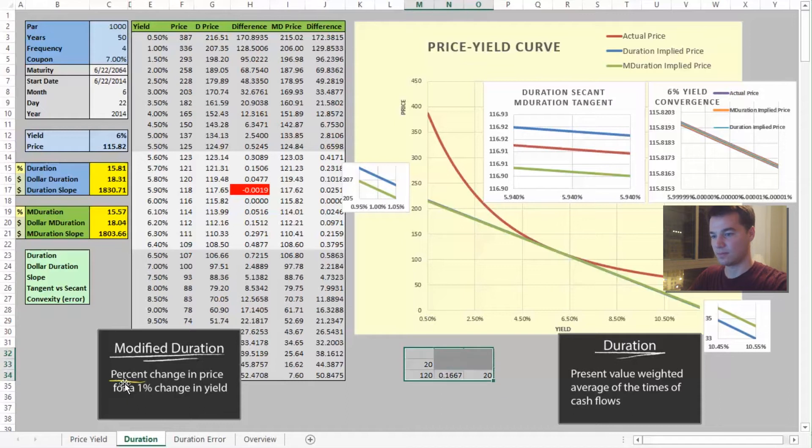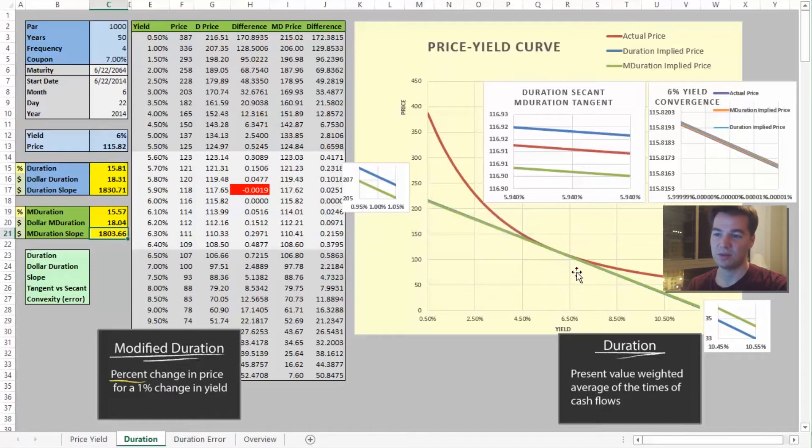So take our modified duration figure, multiply it by our original price, 115.82, and that gives us the slope of this line, because we are now using the same terms, price, for our y-axis. So this is actually a slope of 18.03.